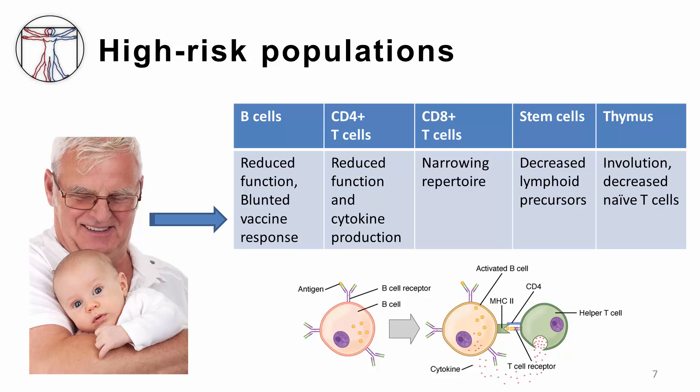In older adults, immune defenses become weaker with advancing age, placing adults over 65 years old at greater risk of severe disease from influenza. The effects of aging on the immune system manifest at multiple levels and include reduced production of B and T cells in bone marrow and thymus, and also diminished function of mature lymphocytes in our secondary lymphoid tissues. As a result, elderly individuals do not respond efficiently to both new and previously encountered antigens, which also decreases the body's ability to have a robust immune response after receiving influenza vaccination.